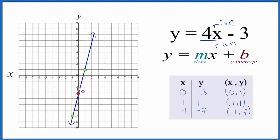We're going to rise 4—1, 2, 3, 4—and go over 1. Let's do it again: rise 1, 2, 3, 4, over 1. So we've done this first part correctly.